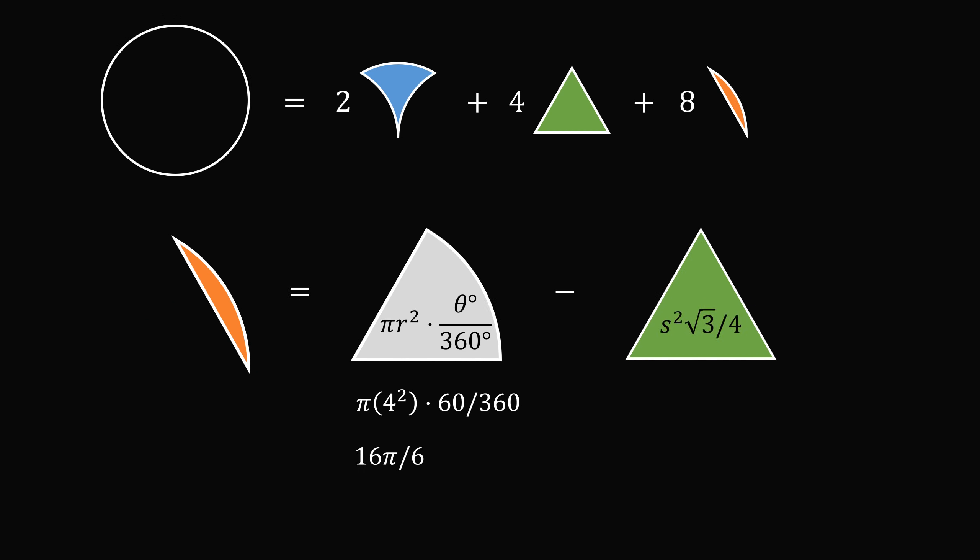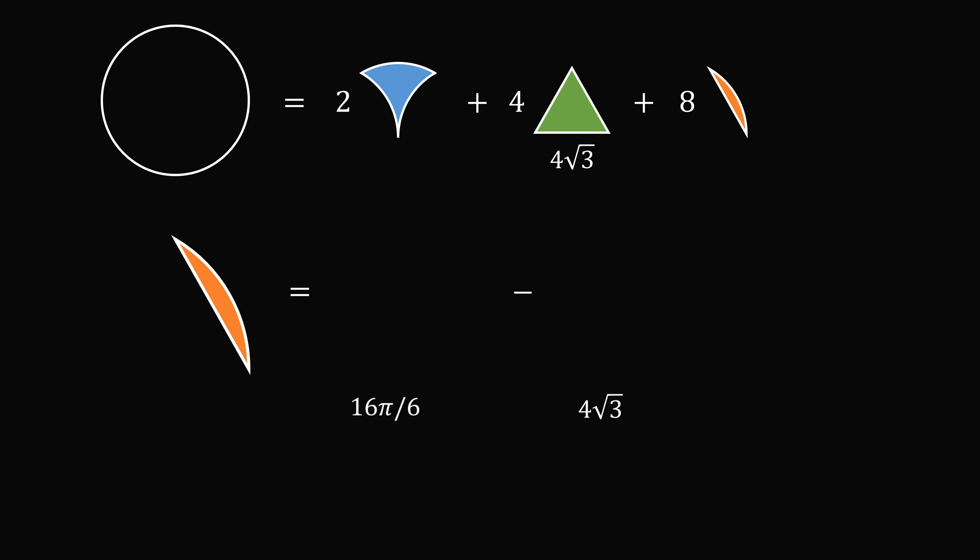Then, the equilateral triangle's area is equal to s squared multiplied by the square root of 3 all over 4. Each side length is equal to 4, so we substitute in and then simplify to get the area of the equilateral triangle is 4 times the square root of 3. We'll now simplify this to get the area of the circular segment. It's equal to 16 pi over 6 minus 4 times the square root of 3, so we'll substitute in.